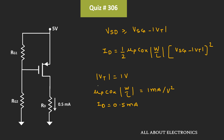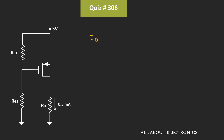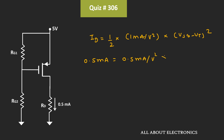Let us put all these values in the expression and find the value of VSG minus VT. So Id equals one-half times 1 mA/V² times (VSG - VT)², and Id is also 0.5 mA. That means 0.5 mA equals 0.5 mA/V² times (VSG - VT)², which gives us VSG minus VT equals 1V.